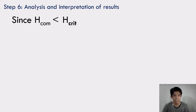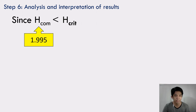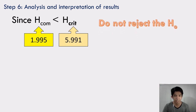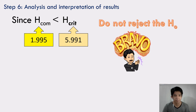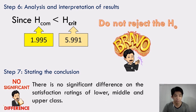Step 6: Analysis and interpretation of results. Since H computed equals 1.995, it is less than the critical value of 5.991. Therefore, we do not reject the null hypothesis. Step 7: Stating the conclusion — we therefore conclude that there is no significant difference in the satisfaction ratings of lower, middle, and upper class.